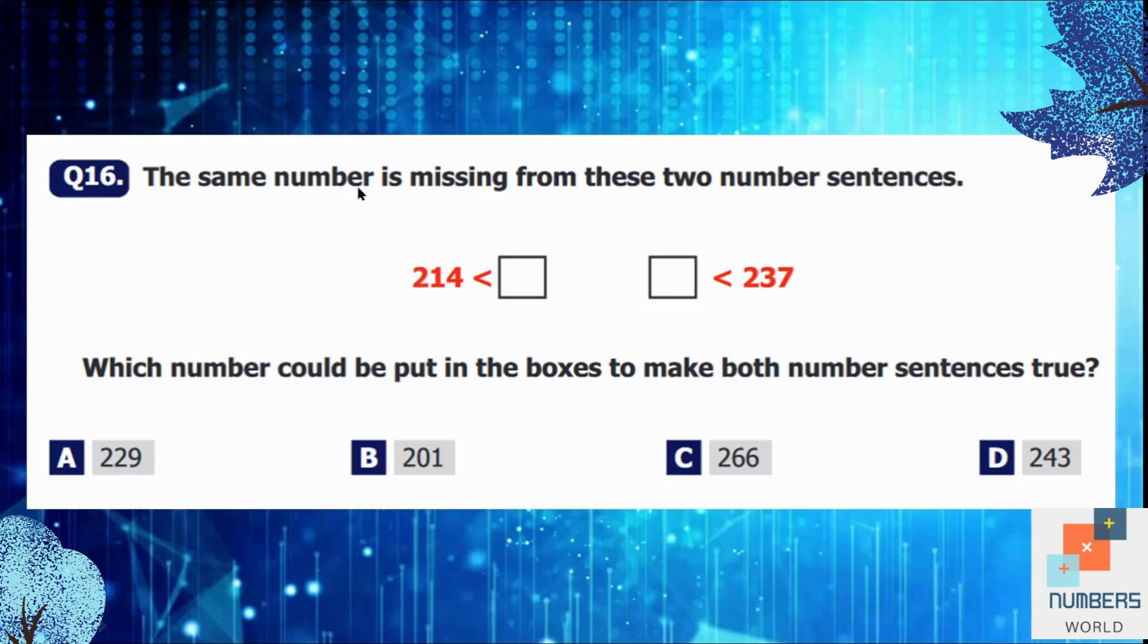Question number 16: The same number is missing from these two number sentences. Which number could be put in the boxes to make both number sentences true? So one by one we will check all our options. So let's start from option A, 229. Is it greater than 214? Yes it is. And is it smaller than 237? Yes it is. So it can be our possible answer. But let's check the other options as well.